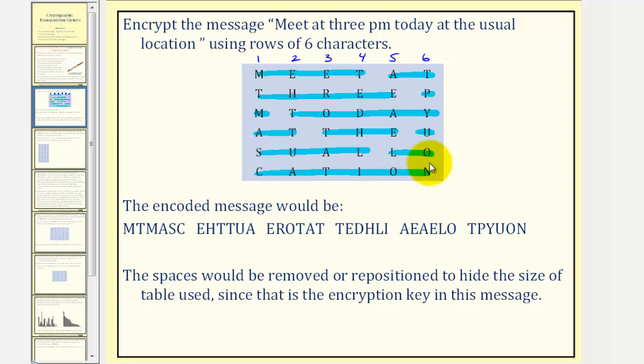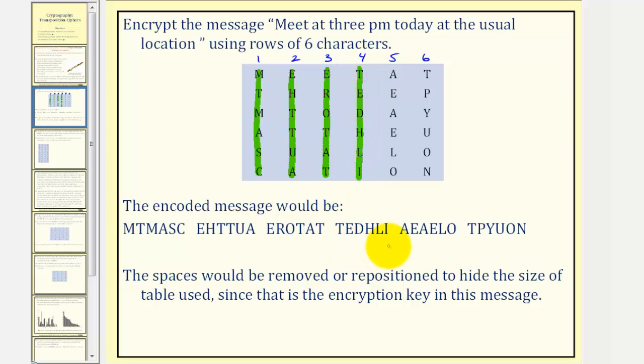And now to encrypt the message, we'd write the characters using the columns. So using the columns, the encrypted message or encoded message would be MTMASC, which we see here, EHTTUA, which we see here, EROTAT, here, TEDHLI, here, AEAELO, and finally TPYUON.